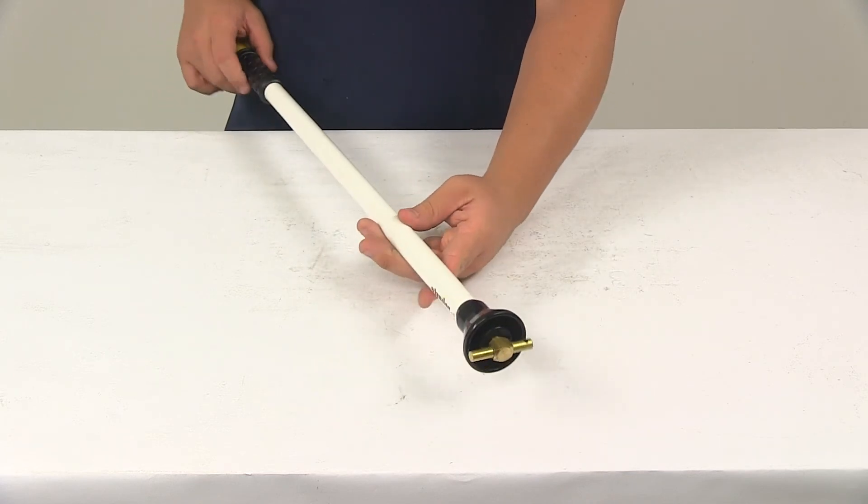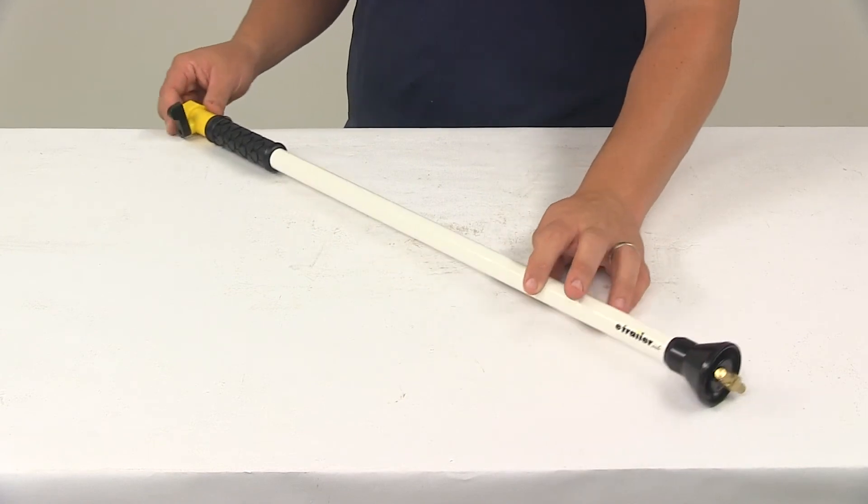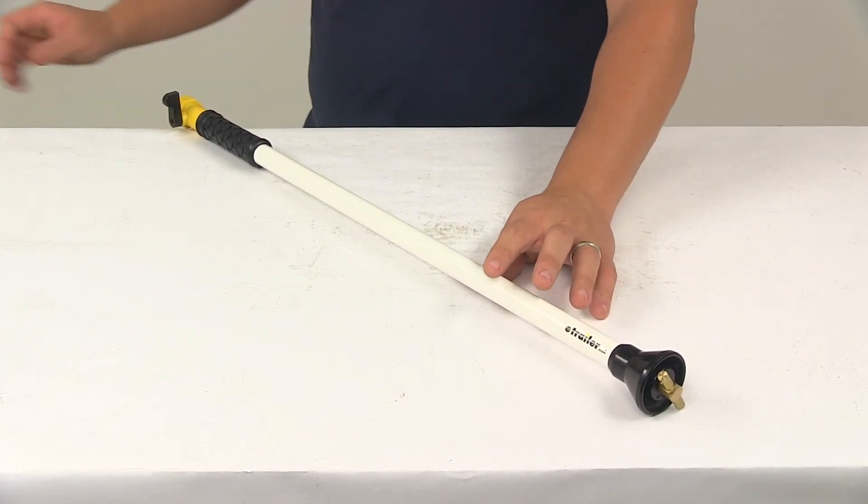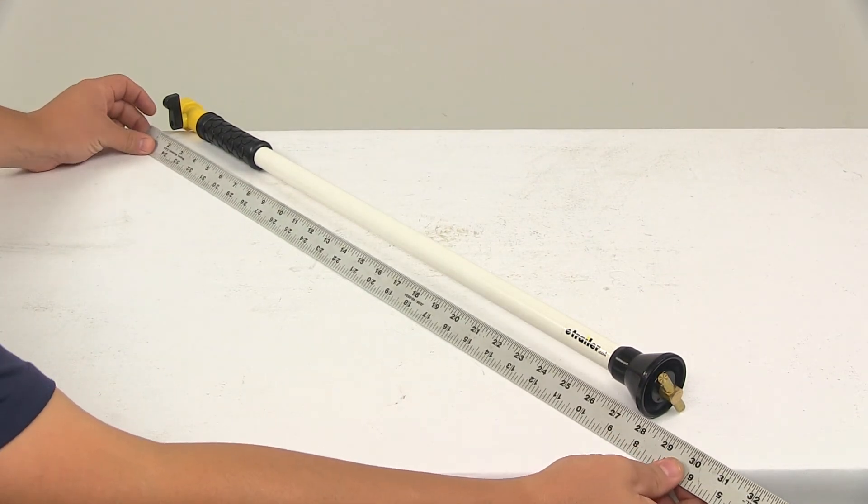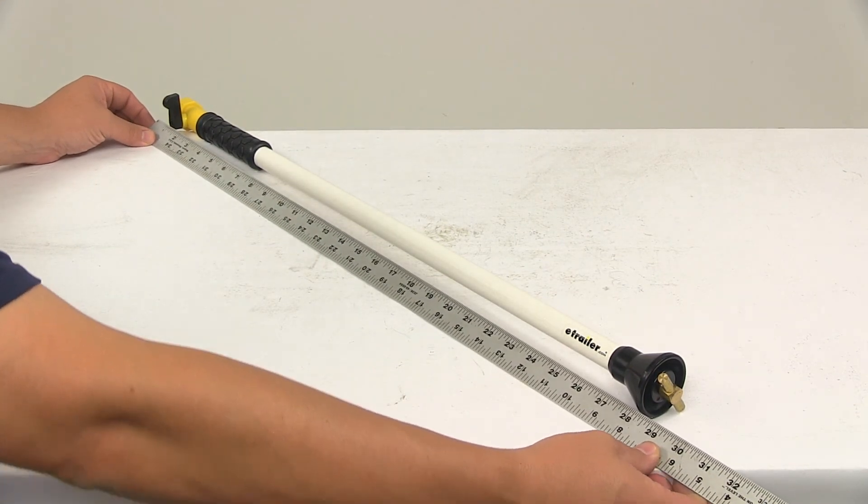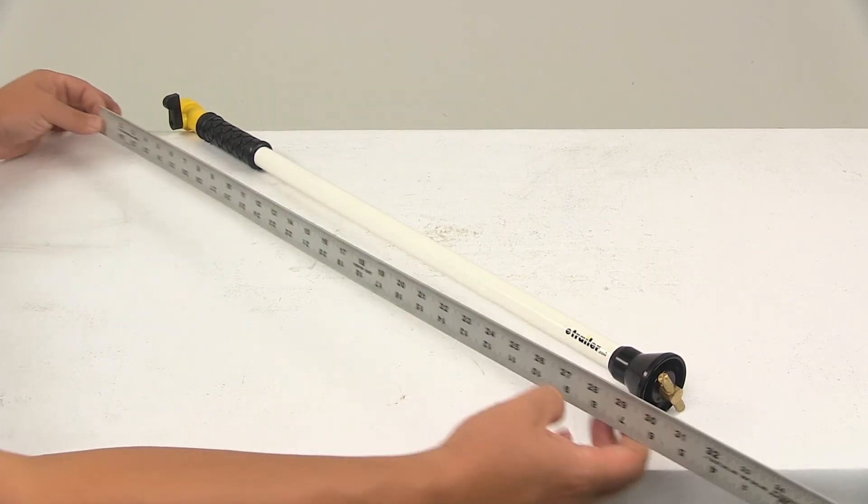Spray diameter is around two inches, and the stick itself, overall length, measuring from where it connects to the hose to the bottom of that black portion there, that's going to give a measurement of around twenty-eight and one-quarter inches long.